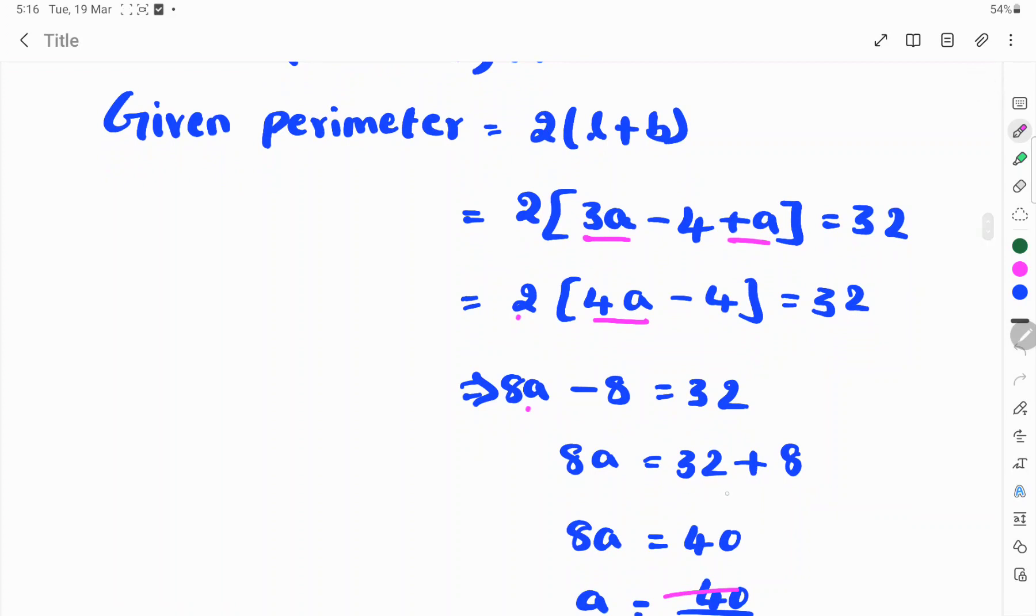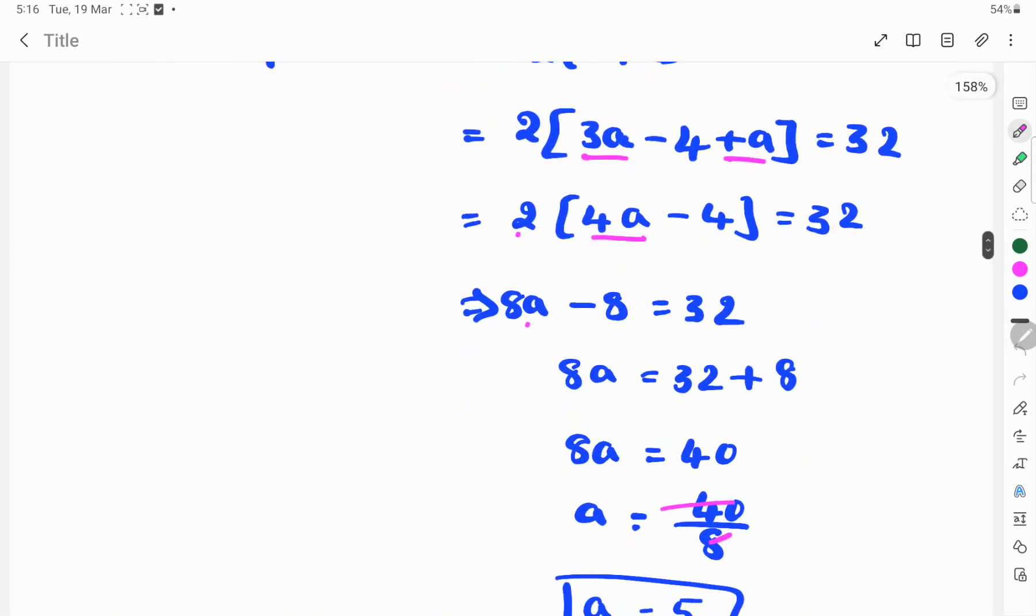8A equals 32 plus 8. 8A equals 40. So A equals 40 by 8.